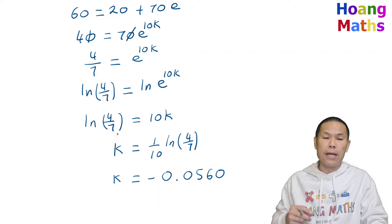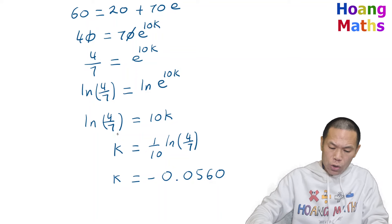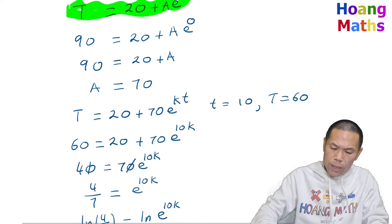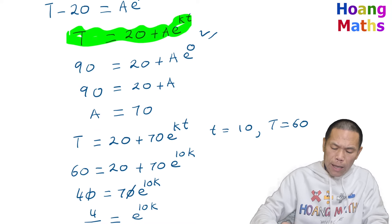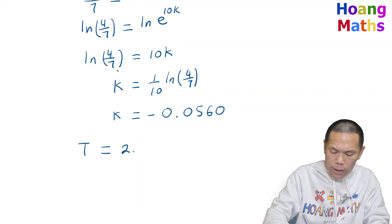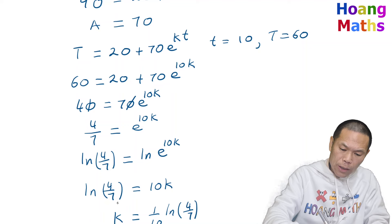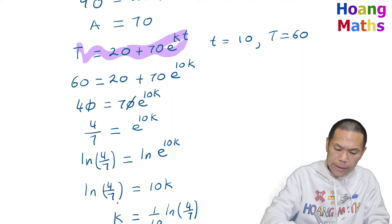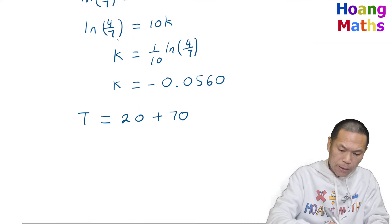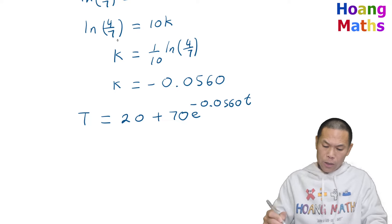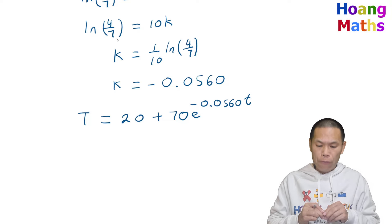So now our temperature equation is T equals 20 plus 70·e^(−0.0560·t). This is the equation for the temperature of the cup of coffee.